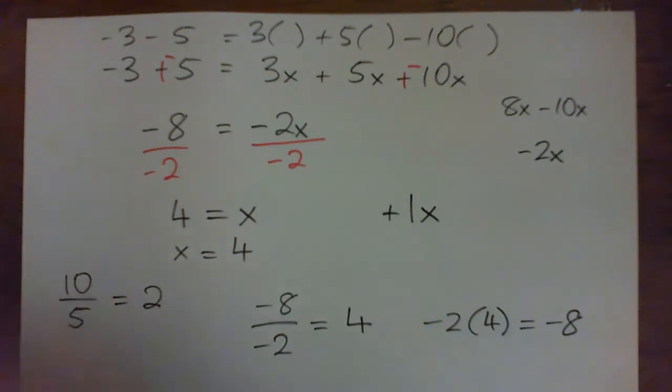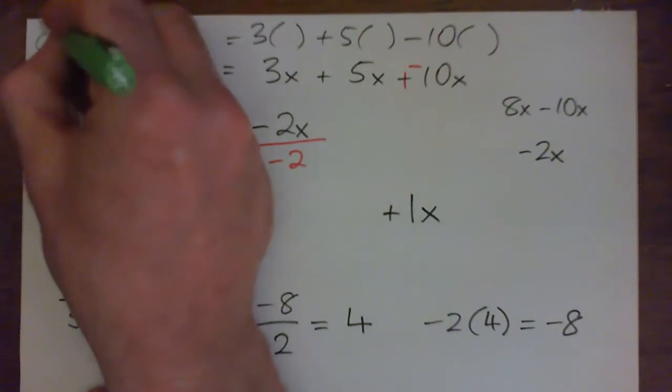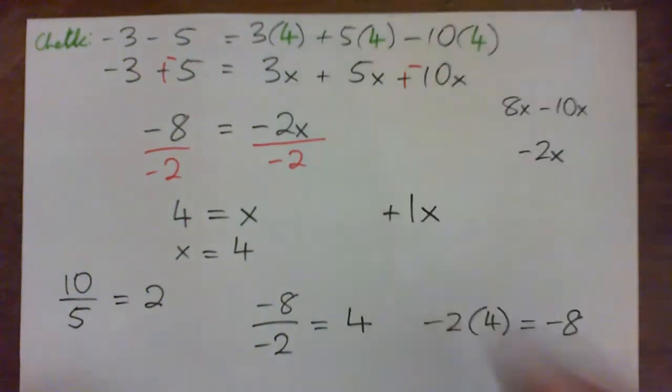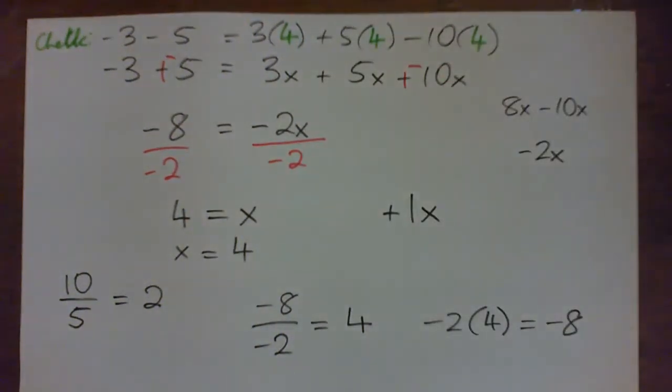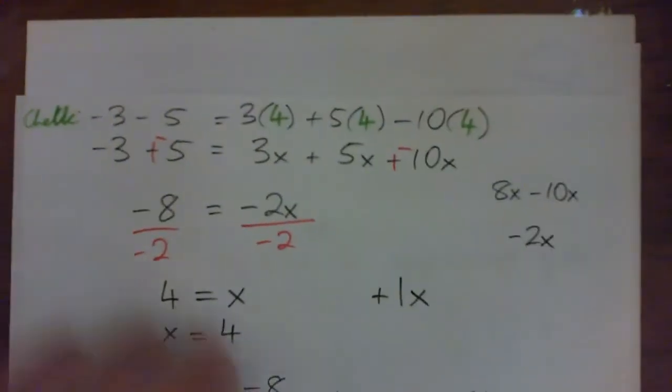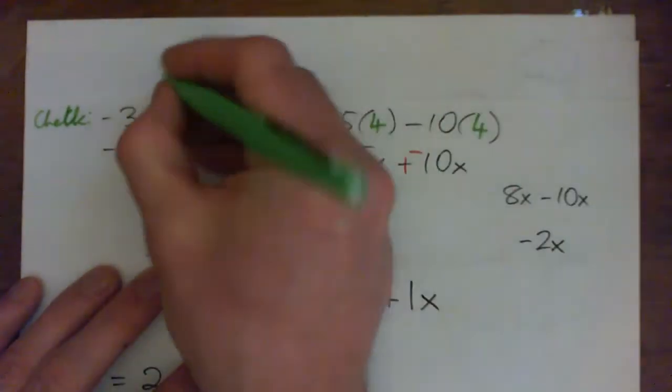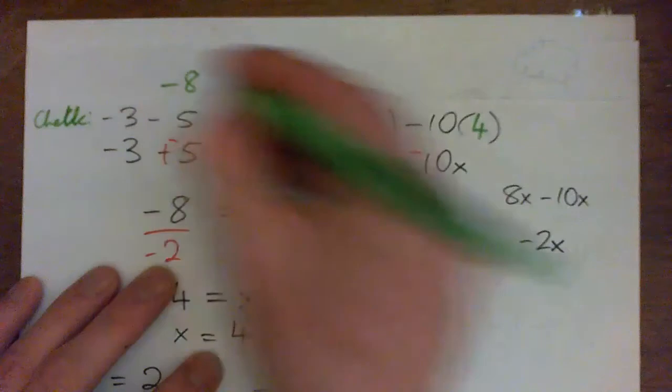And if you were to check your answer, going back to what we talked about at the beginning, check your answer. If we had plugged 4 in for x at the beginning, then both sides would work out to be the same thing. And I can't help doing that just for fun. Negative 3 minus 5 is negative 8. So negative 8 on the left.